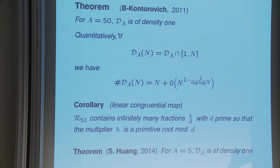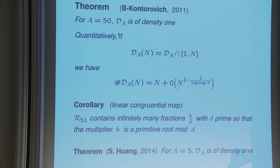That result was improved further by a student of Alex Kontorovich, who proved the same thing knowing instead of A equals 50, he got A equals 5. Because we have a very small exceptional set, what is possible is: if you look at the result for A equals 51, for instance, you will get infinitely many fractions B over D where D is prime and B is a primitive root mod D. The result stated for the linear pseudocongruential number generator is valid for that particular multiplier B.